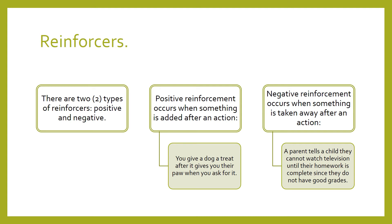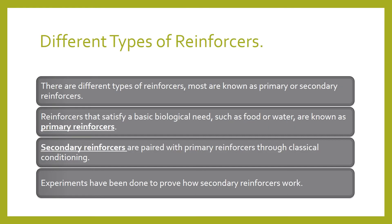Negative reinforcement occurs when something is taken away after an action. For example, a parent tells a child they cannot watch television until their homework is completed since they don't have good grades. It's not doing something bad, but taking something away. The child learns they have to work harder and do better on homework to receive the reward of watching television again. Primary reinforcers — food, water, shelter — satisfy basic biological needs and are things our brains are ingrained to want. We'll do whatever we need to do to get them.